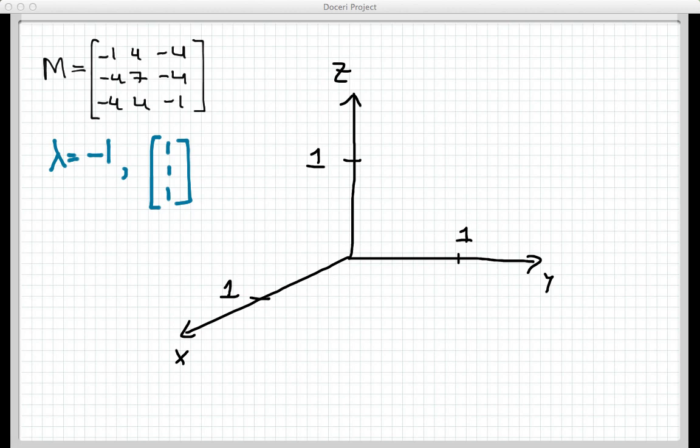That's in R3. So let's visualize this and see what this means from a visual linear transformation standpoint. Here I have drawn the x, y, z axes in R3, and if you want,